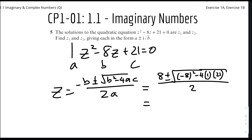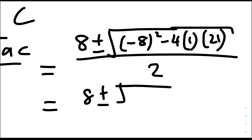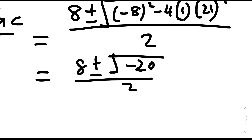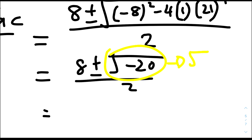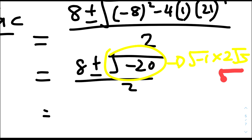Inside the root we get 64 minus 84 equals minus 20. The square root of minus 20 can be split as root(minus 1) times root 20. Root 20 simplifies to 2 root 5, and root(minus 1) equals i. So root(minus 20) equals 2i root 5. The expression becomes (8 plus or minus 2i root 5) over 2.